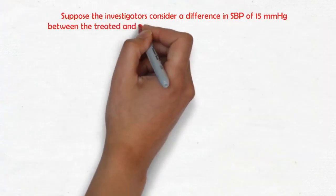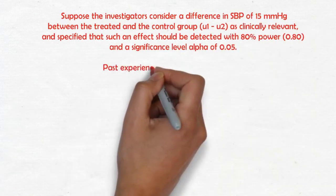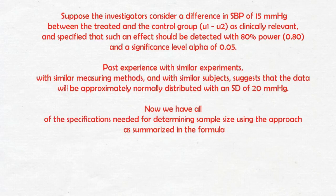Suppose the investigators consider a difference in systolic blood pressure of 15 millimeters of mercury between the treated and the control group (mu1 minus mu2) as clinically relevant, and specified that such an effect should be detected with 80% power (0.80) and a significance level alpha of 0.05.